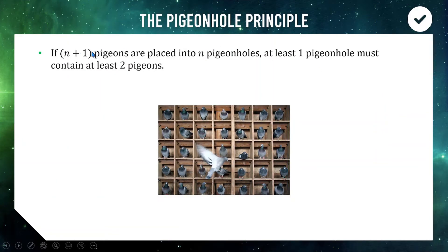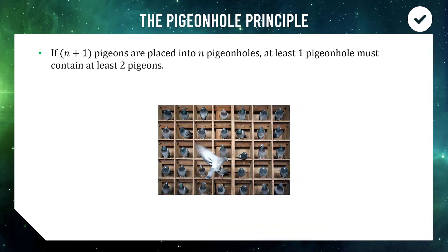This concept is called the pigeonhole principle. It states that if you have n plus one pigeons placed into n pigeonholes, you'll have at least one pigeonhole containing at least two pigeons. If you had n pigeons they'd each fill one hole, so that extra one has to go somewhere. For example, you couldn't fit six pigeons into five pigeonholes without having at least two in one hole.